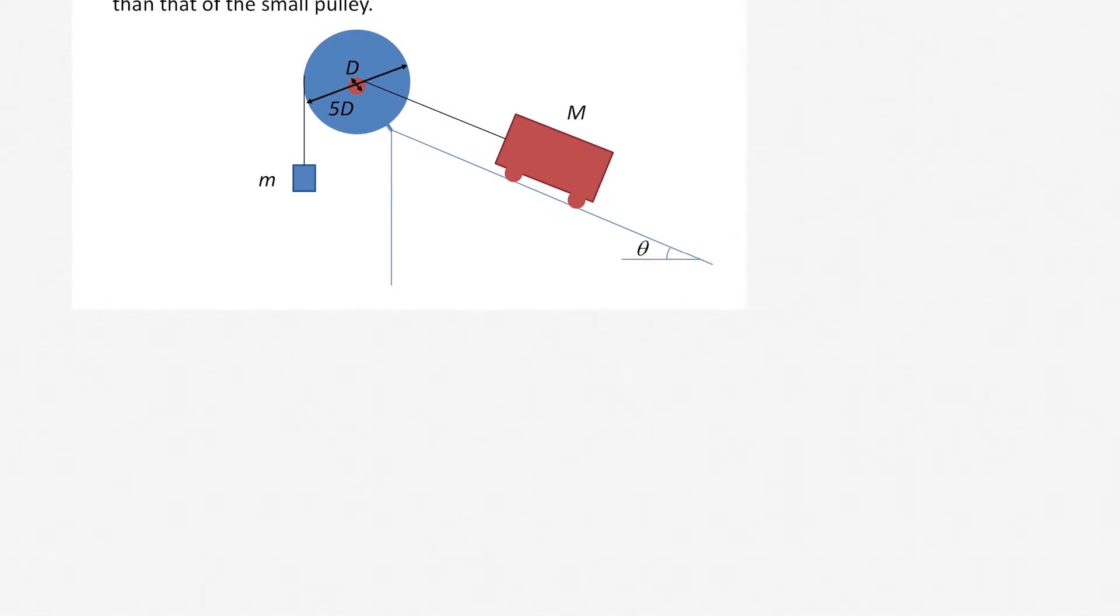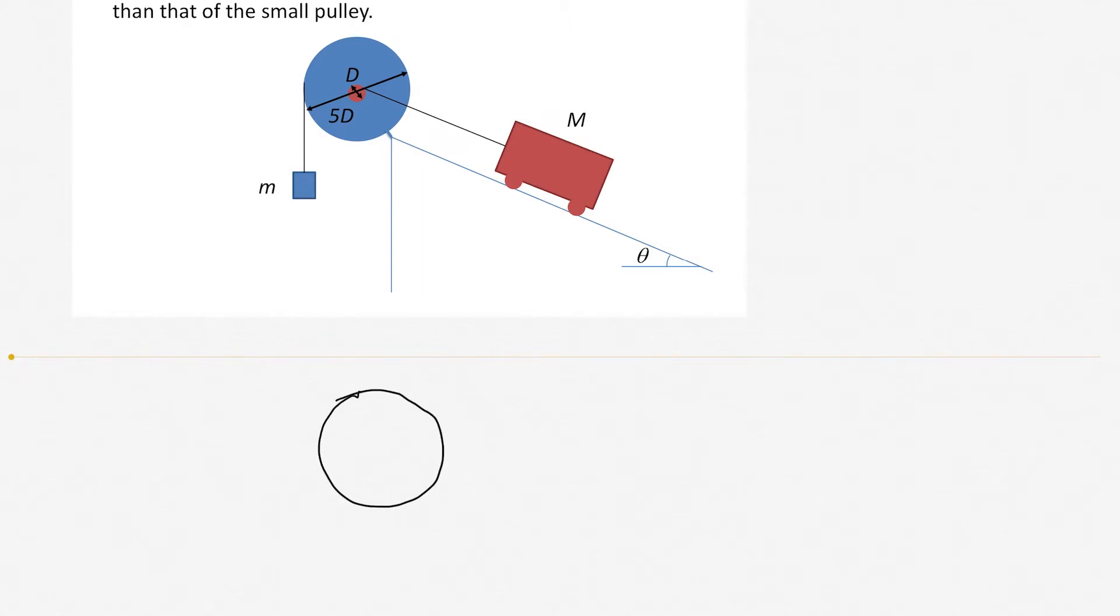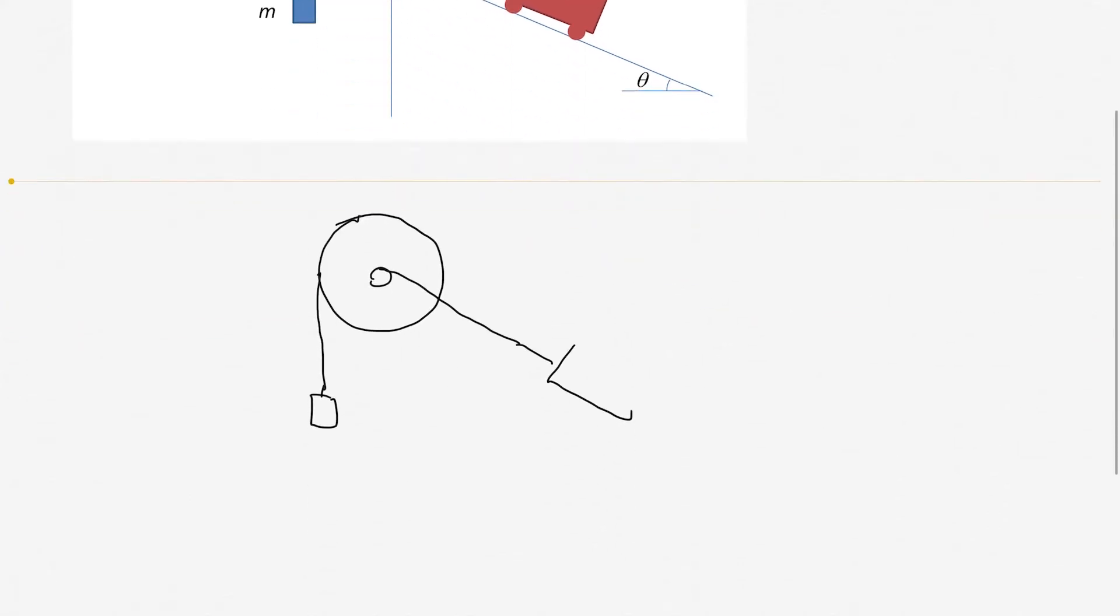We would like to draw the figures. This tension force is acting on this object and the small pulley connects to the car. Capital M and lower case m. This is 30 degrees, theta equal to 30 degrees.